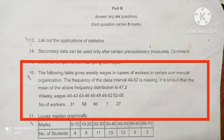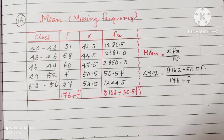We have to find that one. For finding mean, we have to make a table. First column is class. Next one is frequency. Adding all the frequencies: 176 plus f. x i is middle value of class. Last column, f into x. And adding all the fx, 8162 plus 50.5f.